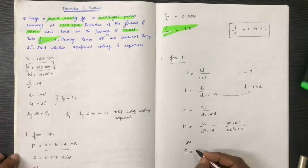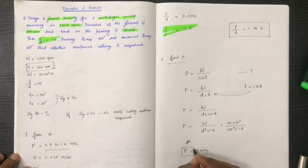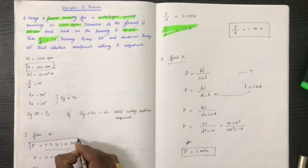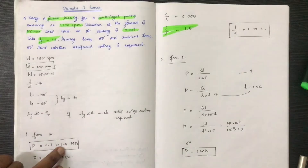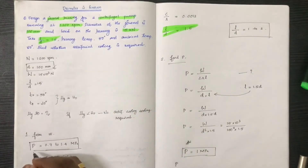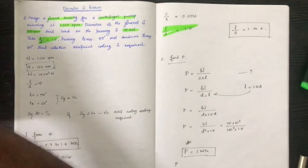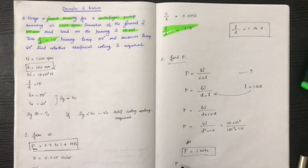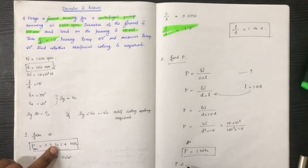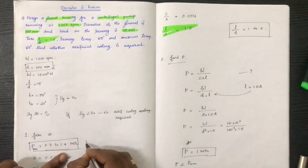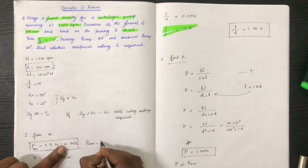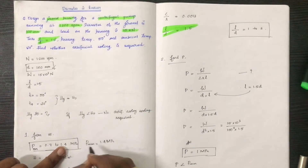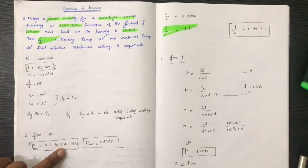The value of P is 1 MPa. Since the P range is 0.7 to 1.4 MPa and P is less than P_max of 1.4 MPa, the pressure is within the acceptable range.